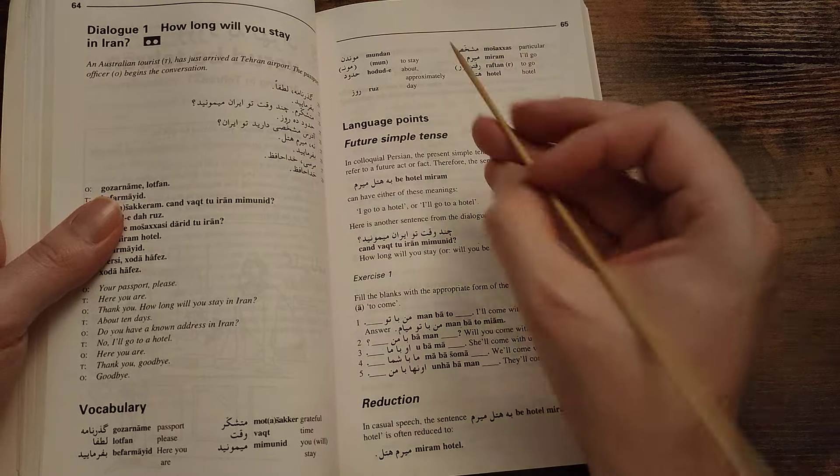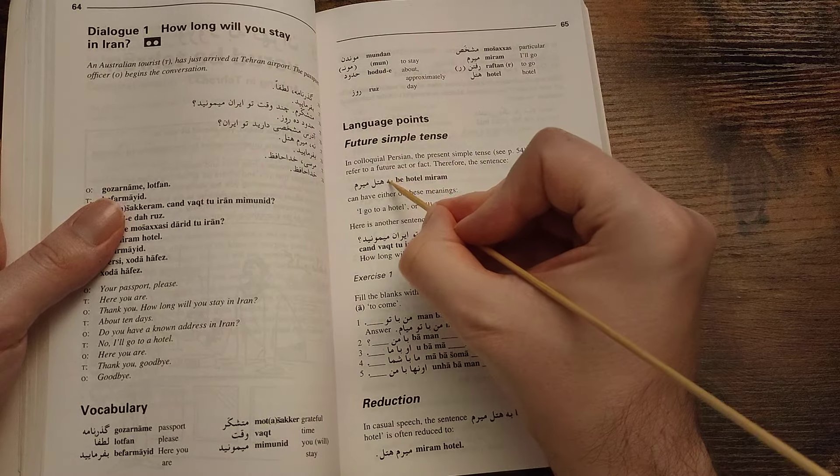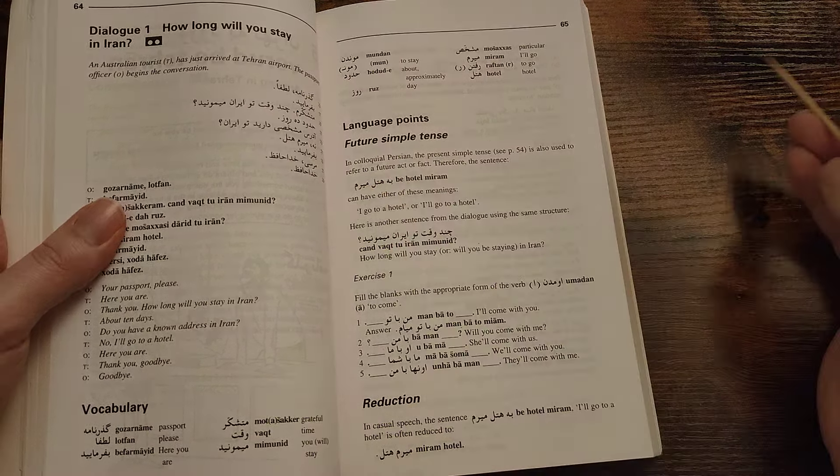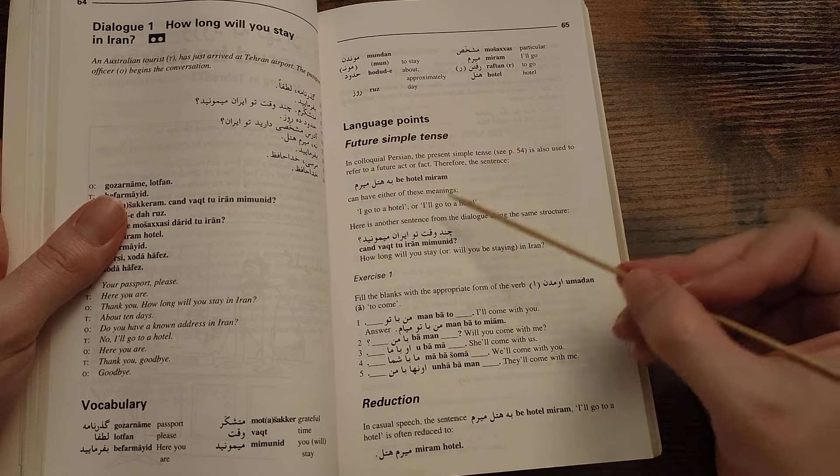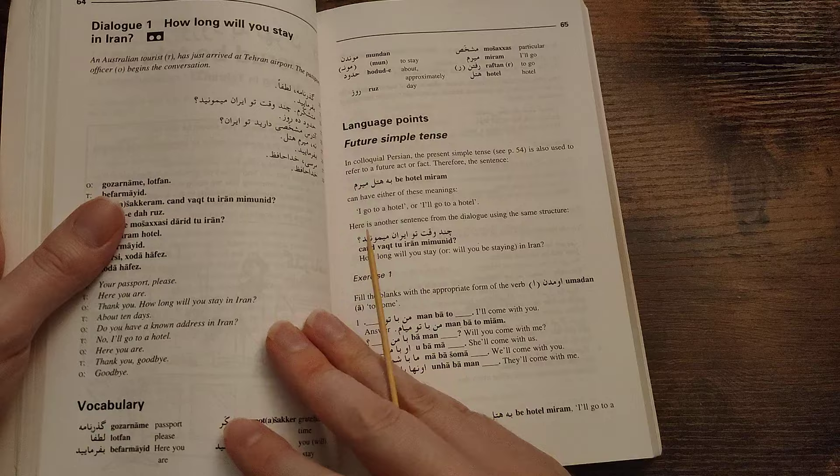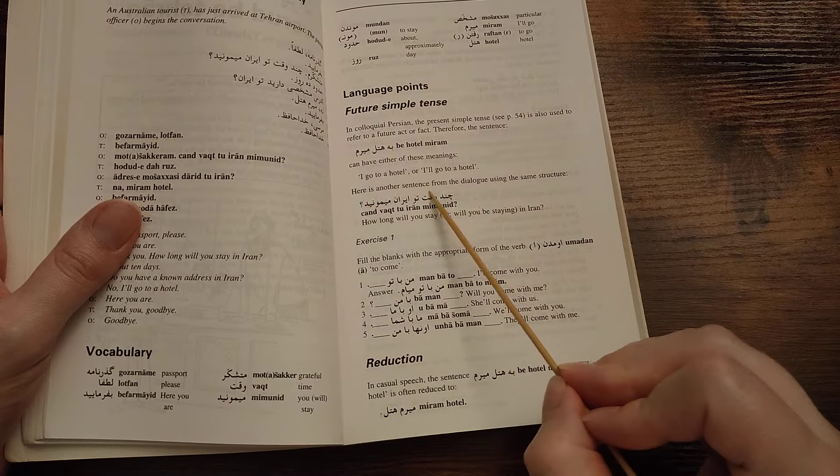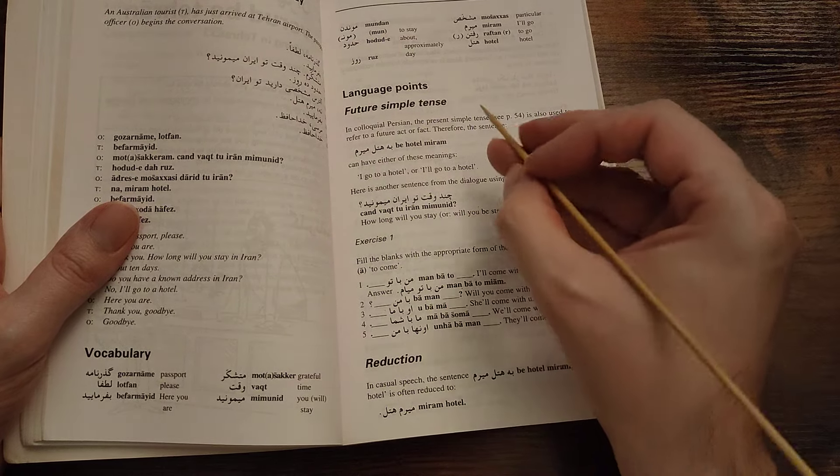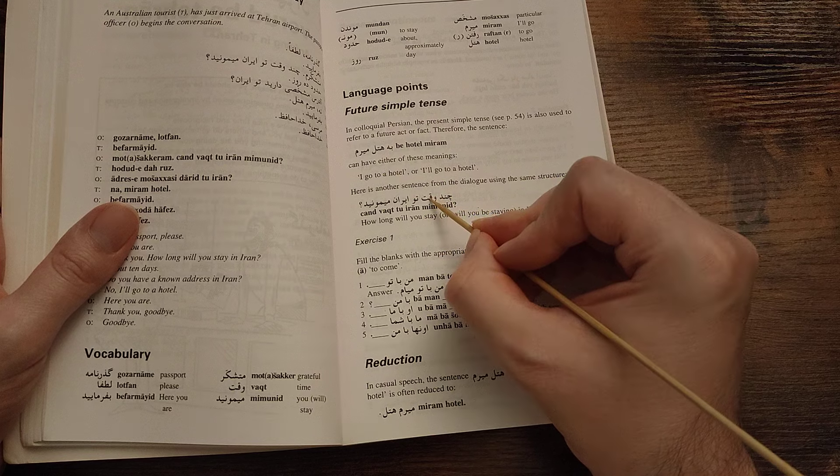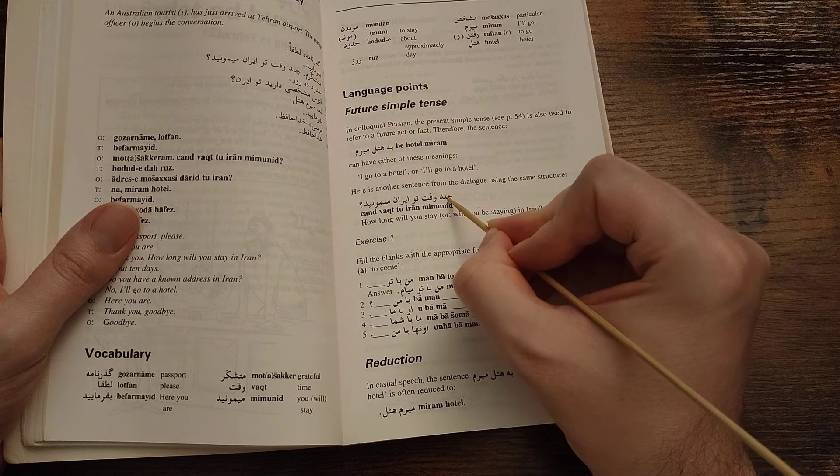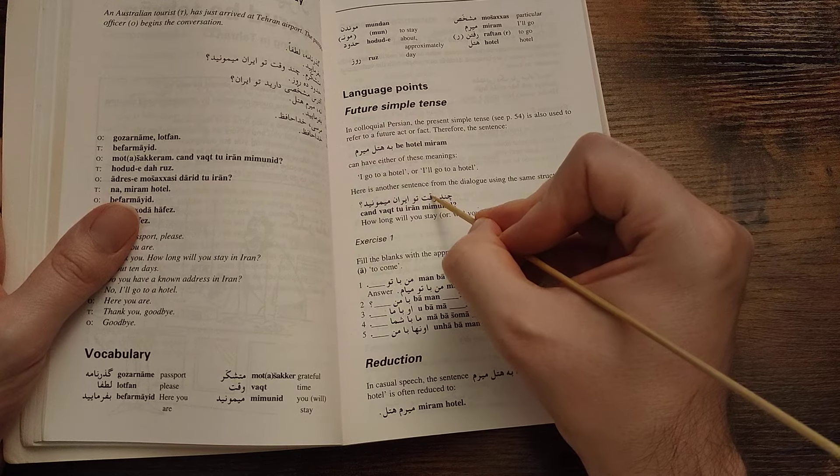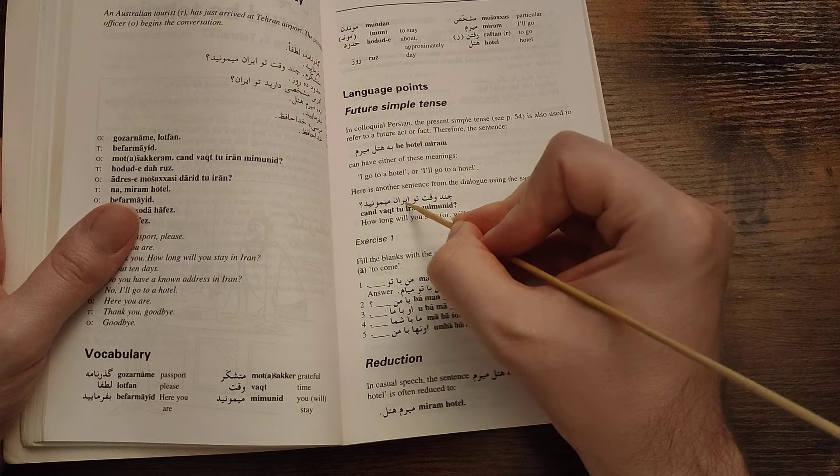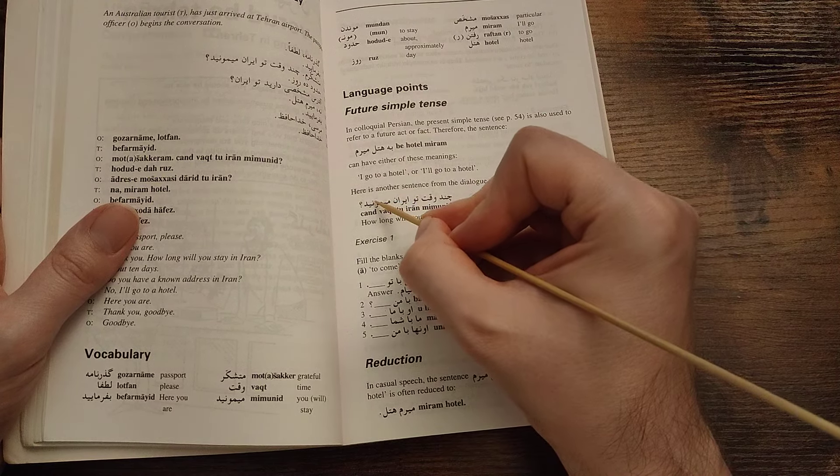Future simple tense. Be hotel miram. Be hotel miram. Can either mean I go to hotel or I'll go to hotel. Here's another sentence from the dialogue using the same structure. Chand vaght tu Iran mimunid? Or vaght if you want to be very accurate. Chand vaght tu Iran mimunid?